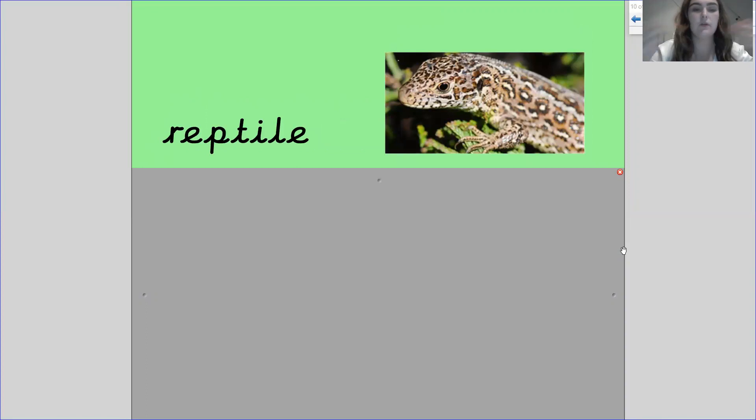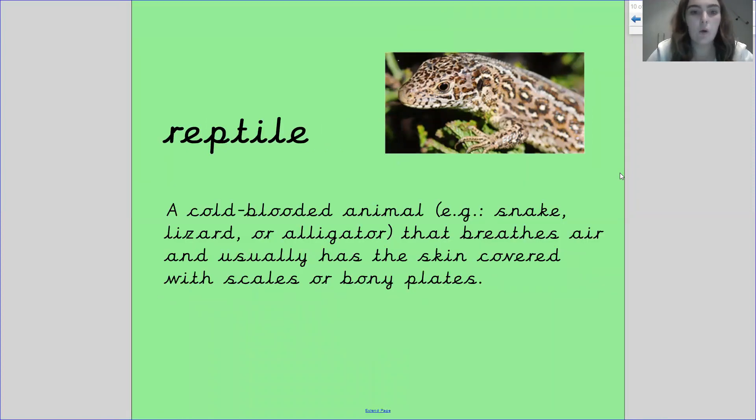Our next word is reptile. My turn, your turn. Reptile. Reptile. A reptile is a cold-blooded animal, for example, a snake, a lizard or an alligator. It breathes air and usually has skin covered with scales or bony plates.